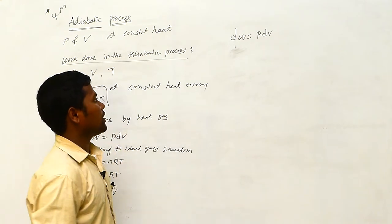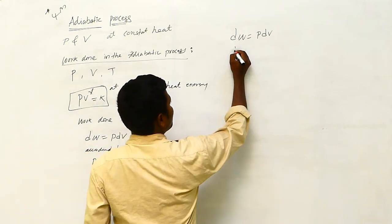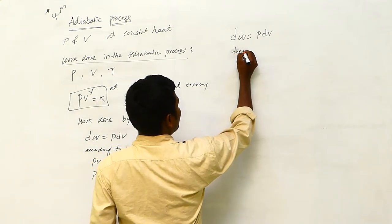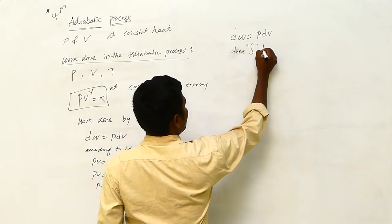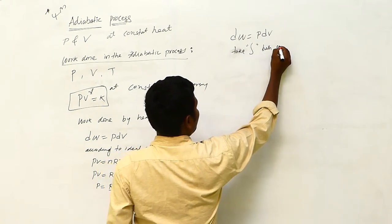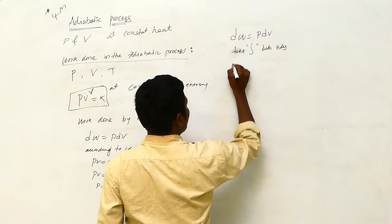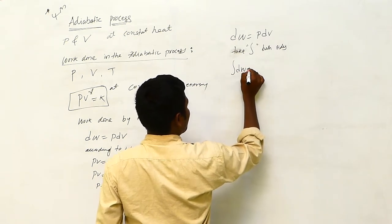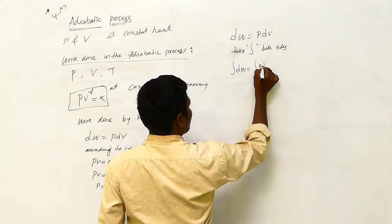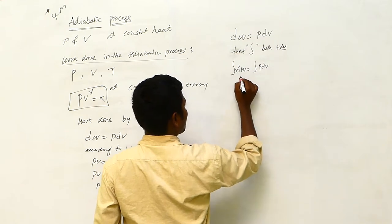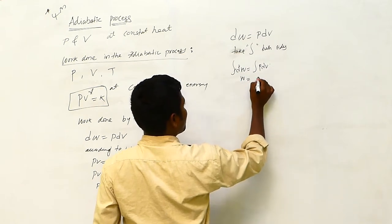The equation is dW = P dV. Now integrate both sides, so the integration and differentiation cancel out.